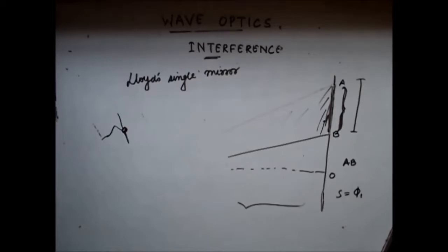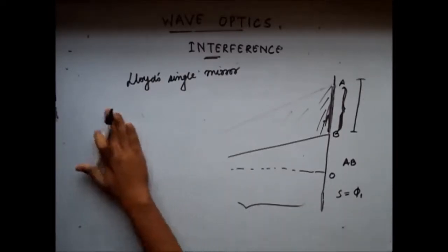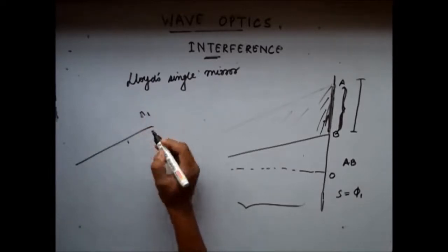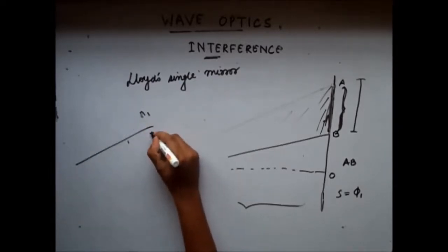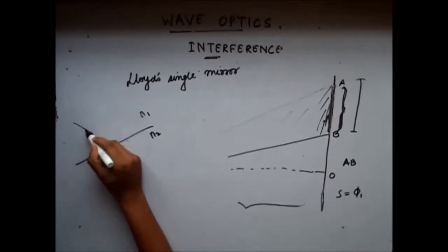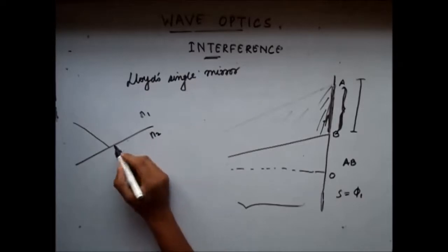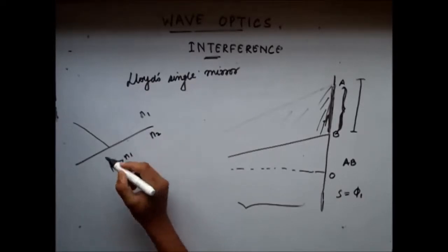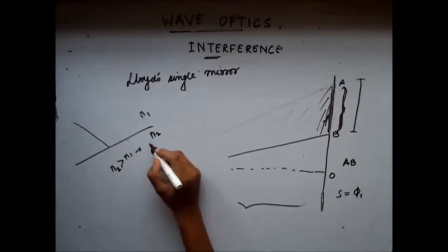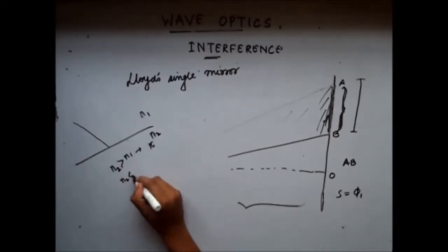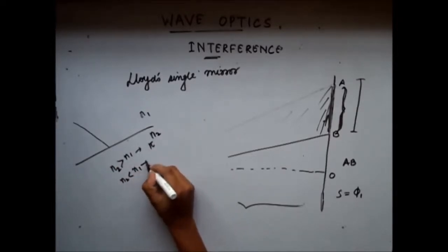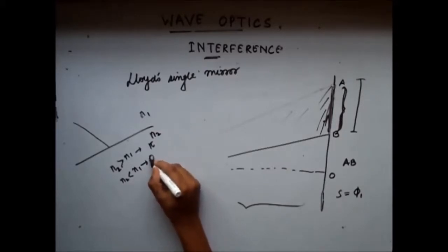For light waves, you can draw a similar analogy. When light waves travel from a medium with refractive index n1 and strike the surface separating two media — if n2 has a refractive index greater than n1, then the light waves get a phase change of π. If n2 is a lighter medium than n1, then there is no phase change; the phase change is zero.